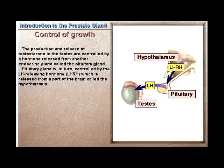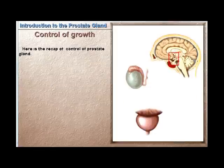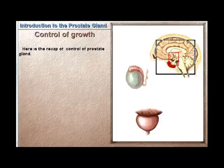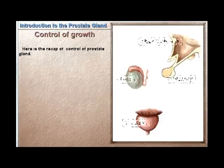The production and release of testosterone in the testes are controlled by a hormone released from an endocrine gland called the pituitary gland. The pituitary gland is in turn controlled by the LH-releasing hormone (LHRH), which is released from part of the brain.